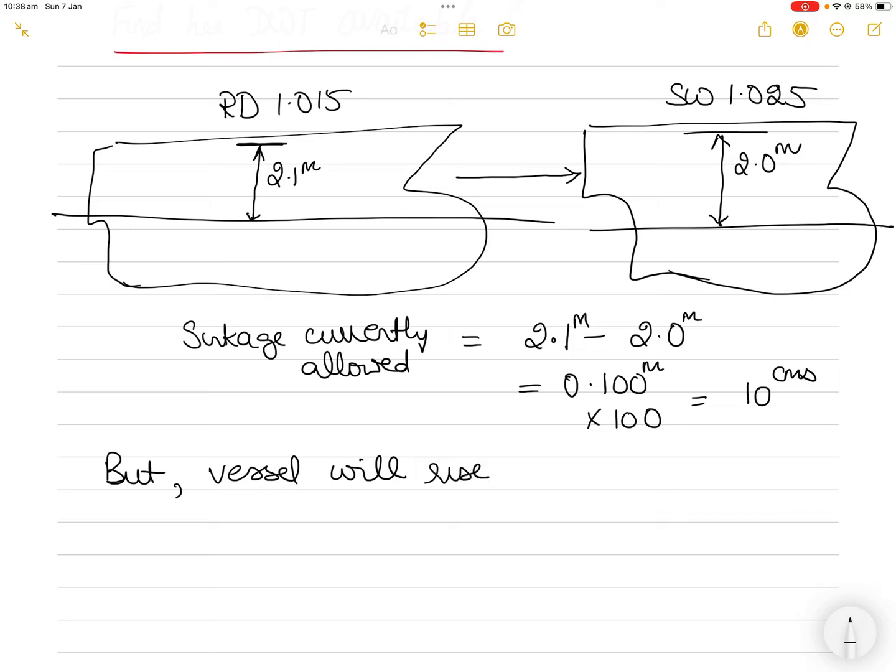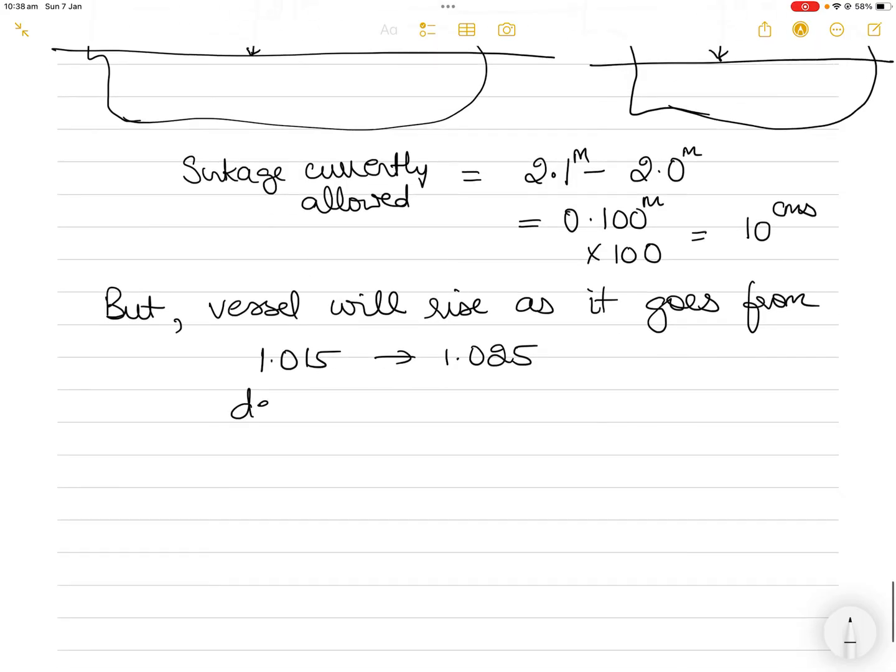The vessel will rise as it goes from 1.015 to 1.025. Why? Because as the density increases, the draft decreases—it's an inverse relationship. Draft decreases means the vessel will rise as the water gets saltier.